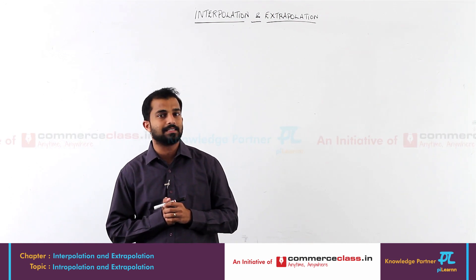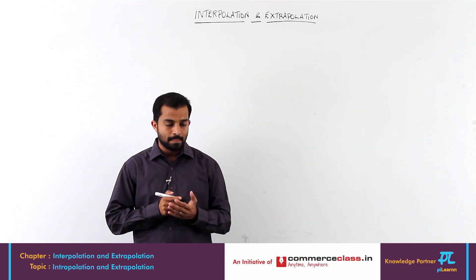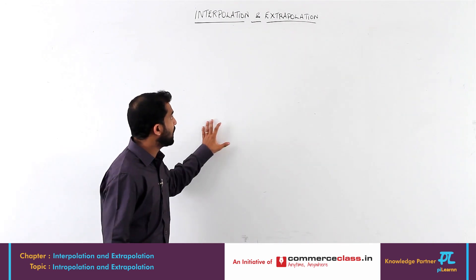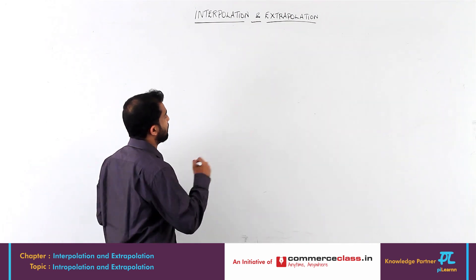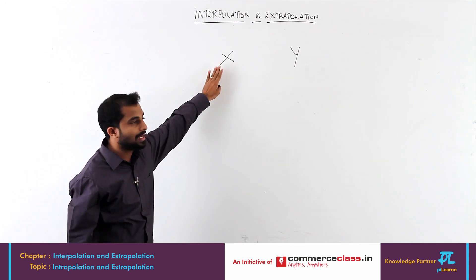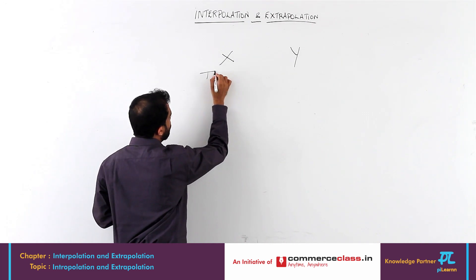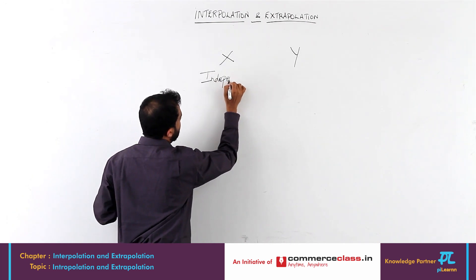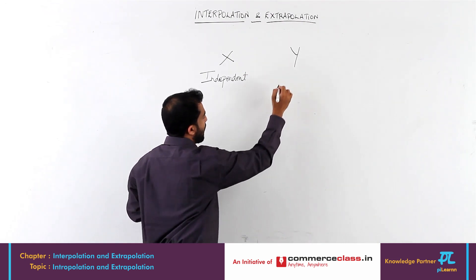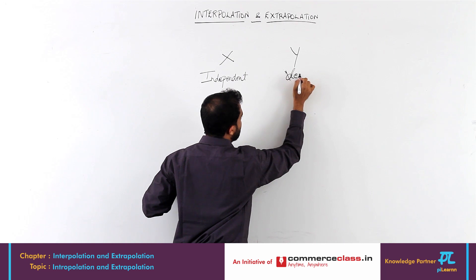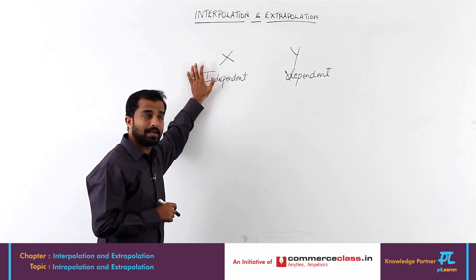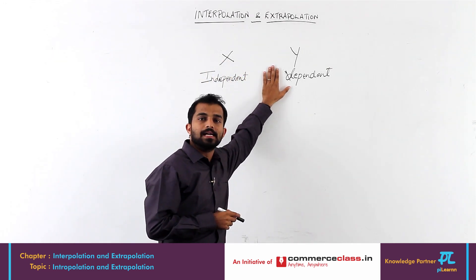You have done interpolation last year in our first few classes in statistics. This is just the extended version of it — in fact it is very easy. To begin with, interpolation or extrapolation basically will have two variables: x and y. The x variable has to be an independent variable, whereas y has to be a dependent variable.